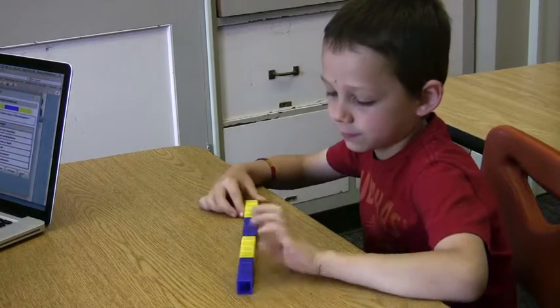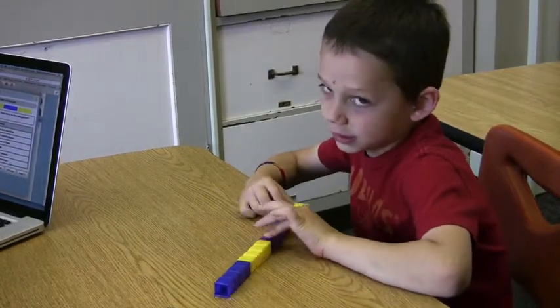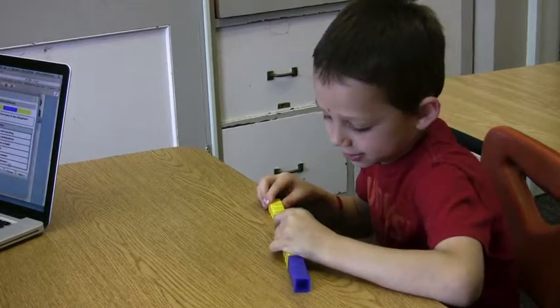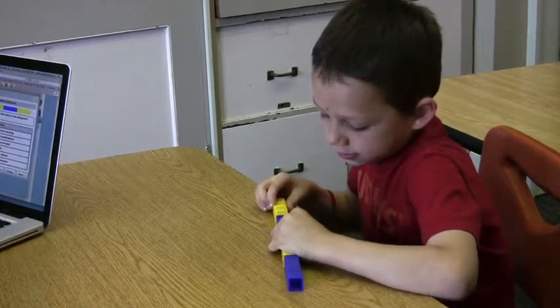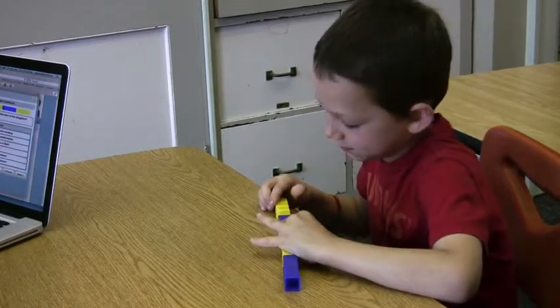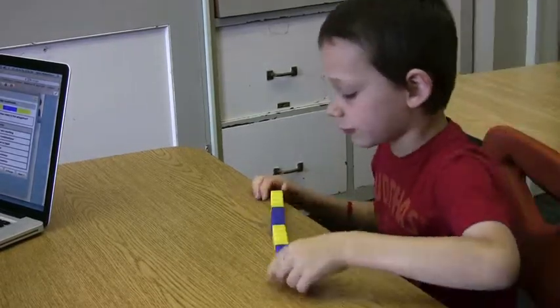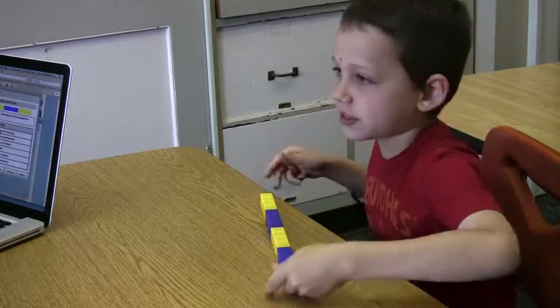So there are eight and eight. How many is that all together? Sixteen. I was pretty sure it was sixteen but I just wanted to double check.